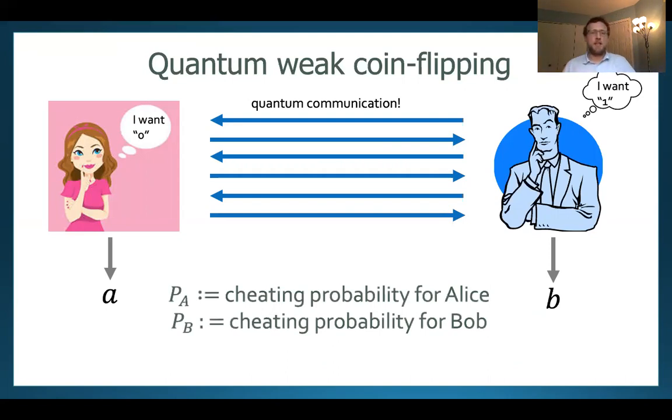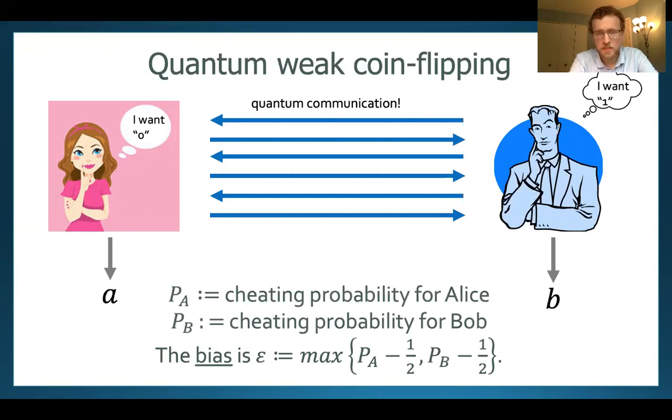So we measure how good a protocol is based on the cheating probabilities for Alice and for Bob. And we basically say the bias is the maximum of P_A minus one half and P_B minus one half where P_A and P_B are those cheating probabilities. And our goal is to get that figure as close to zero as possible.